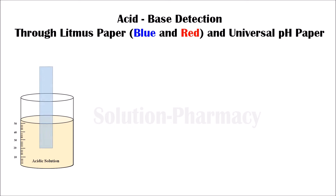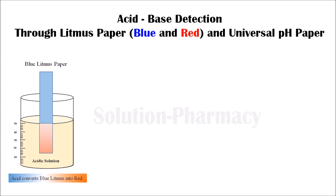When we dip blue litmus paper into this acidic solution, this blue litmus paper converts into red. Here you can see the blue litmus paper changes to red, which confirms that our solution is acidic in nature, because acid converts blue litmus to red. When we dip red litmus paper into this acidic solution, no change takes place.